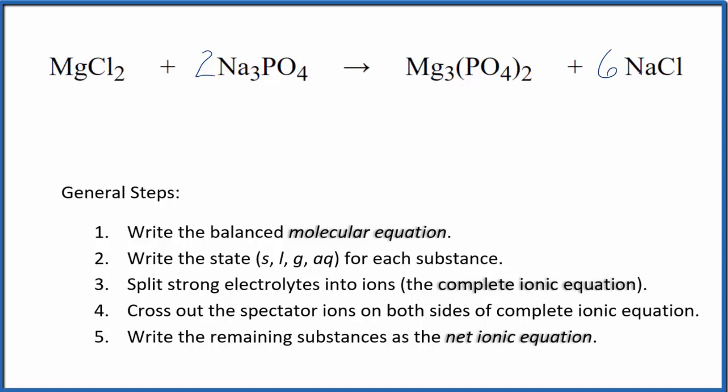We put a 6 over here. Sodium atoms are balanced, but six chlorine atoms. So we need a 3. So now we have 3 times 2, 6 chlorines, 3 magnesium, 3 magnesium. The molecular equation is balanced.